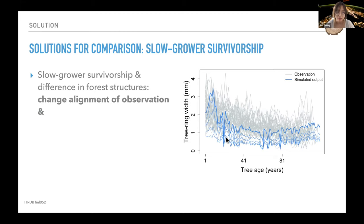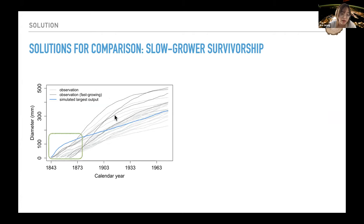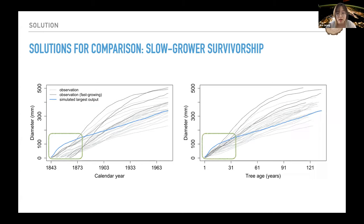The model data comparison cannot correct for slow-grower survivorship, but consistency between models and observed tree growth can be improved by two measures. First, the data alignment can be adjusted to extract information we want. For example, as I mentioned before, there are diverse tree growth in the same cohort, and the fast-growing trees may have died already, so we can see a discrepancy between simulation and observation for the young stand. However, if we align the observation by their age, then the discrepancy is filled with the fast-growing trees. So by using different time perspective, we can expect different information from it.